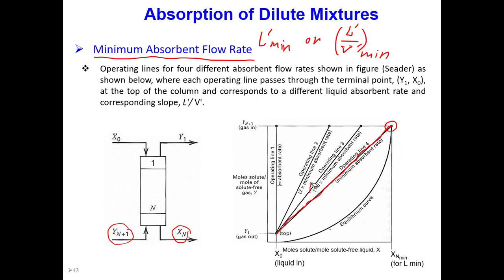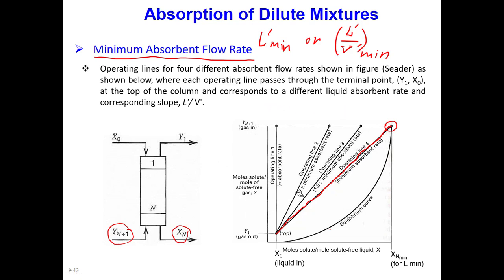Usually the operating liquid flow rate is 1.5 times the minimum flow rate: L prime operating = 1.5 × L prime minimum. We can use even higher values — at higher values the slope is much larger. When we have an infinite amount of absorbent, L prime is very high, giving a vertical operating line, but that is an imaginary case. The most common operating line used in an absorber is around 1.5 times minimum.